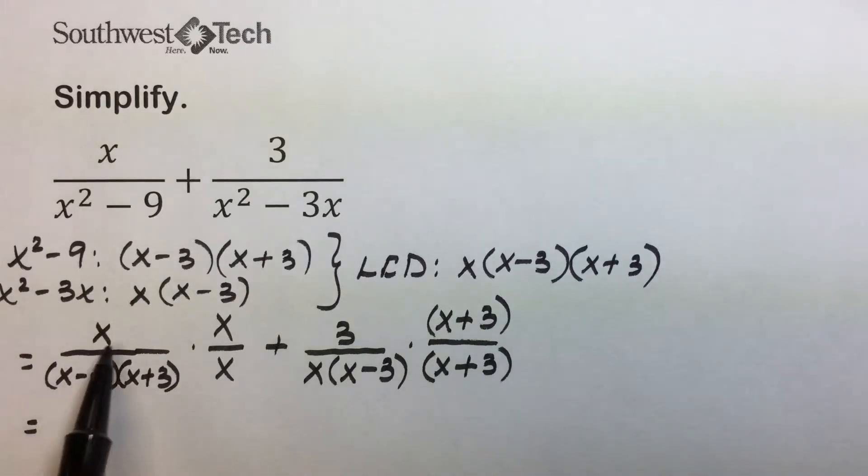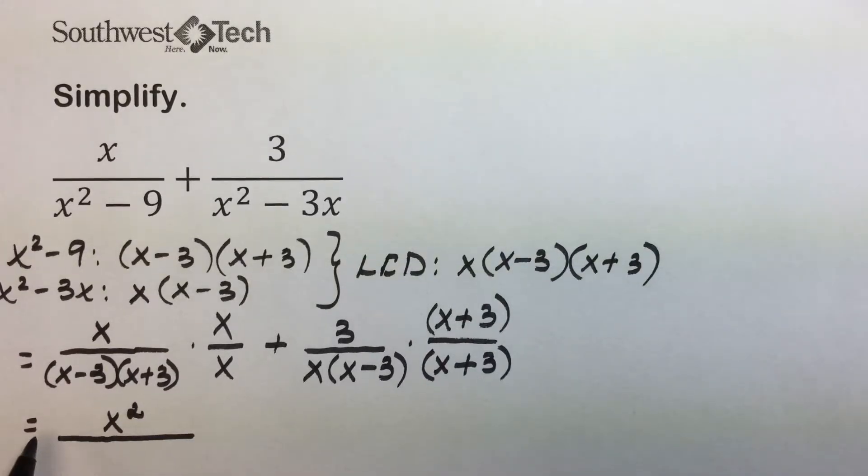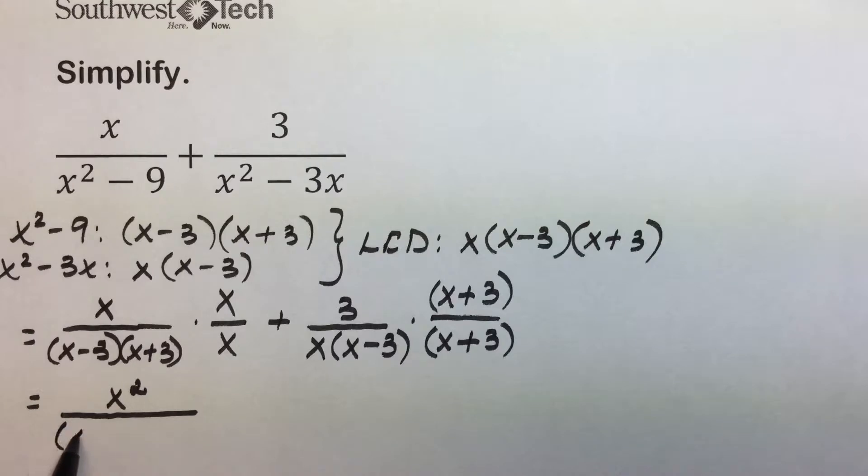Next we'll simplify by multiplying numerators in the first rational expression, giving us x squared over that common denominator of x minus 3, x plus 3, and I'm going to move that x to the front so I don't forget it.